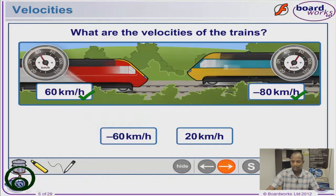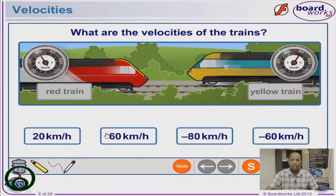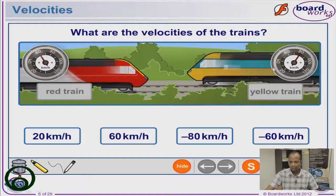Let's do a quick exercise. Looking at the speedometer in train A, the speed is 60 kilometers per hour. Train B has a speed of 80 kilometers per hour. Train A is going towards the right, meaning it has a positive sign. Train B is going towards the left, meaning it has a negative sign.